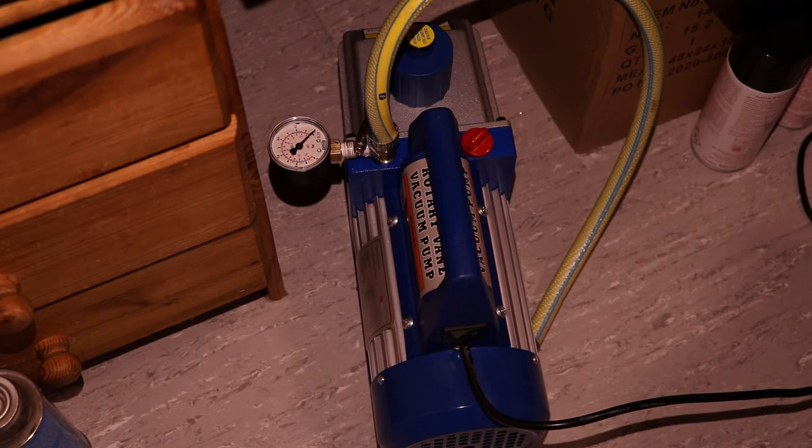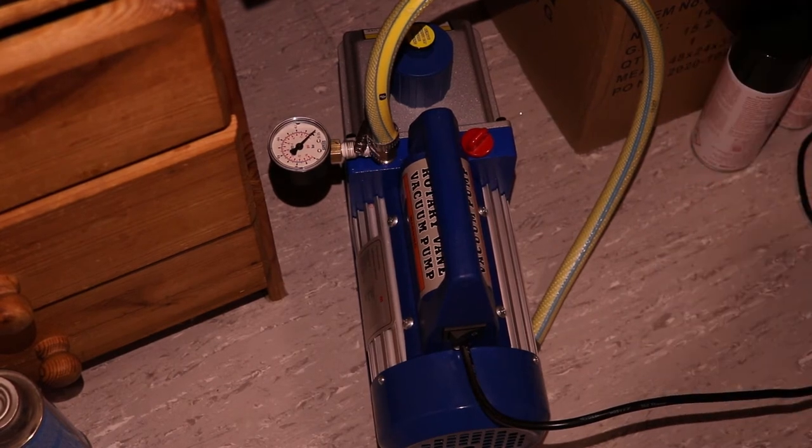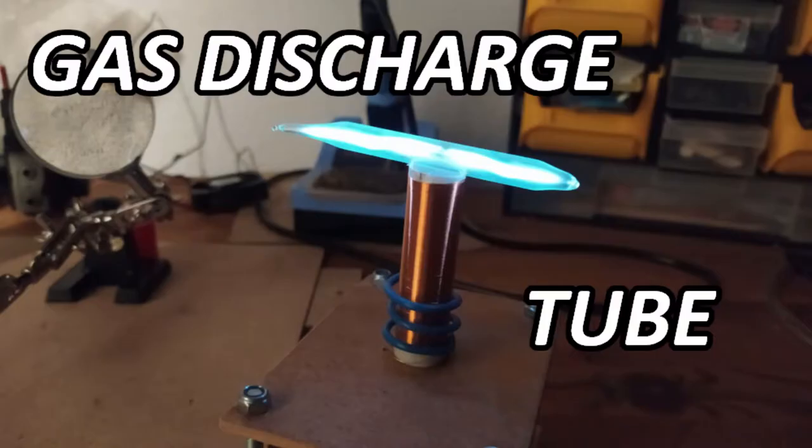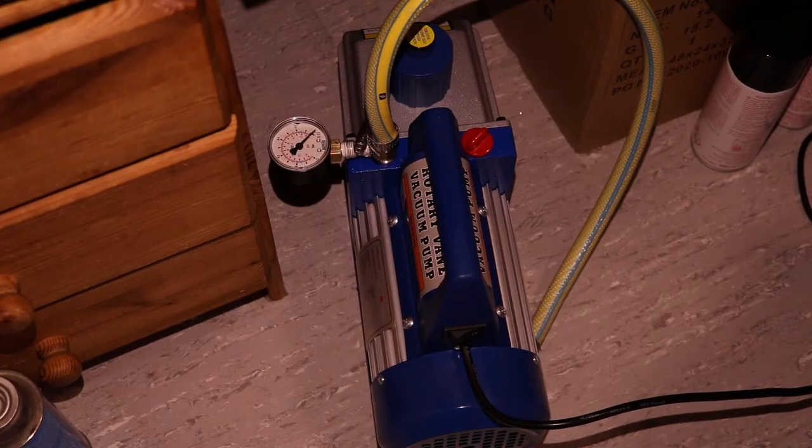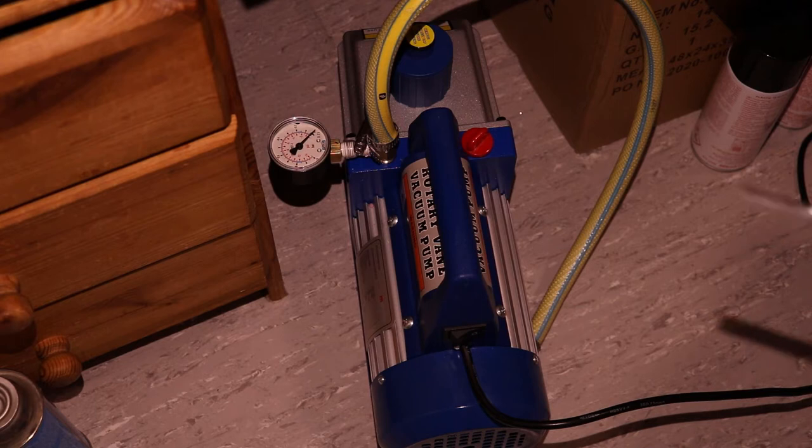What you also need is a vacuum pump. I have this vacuum pump I showed in the last video with the fluorescent tubes or the gas discharge tubes I made. You need this and hook it up to the glass construction, and I will do this now.